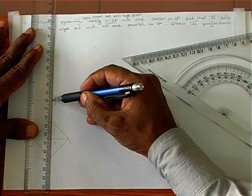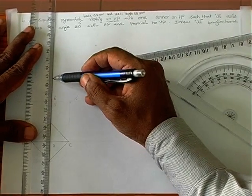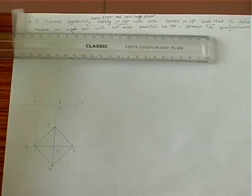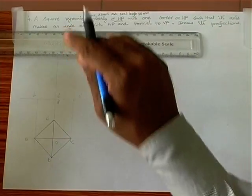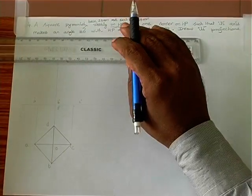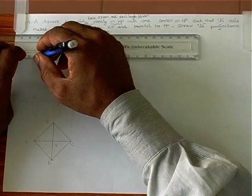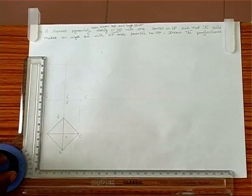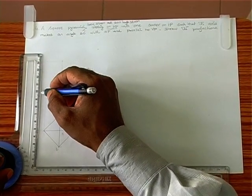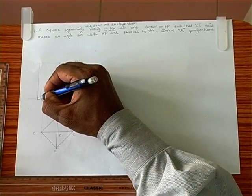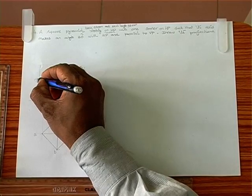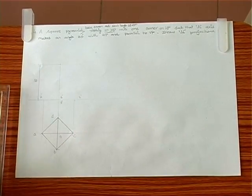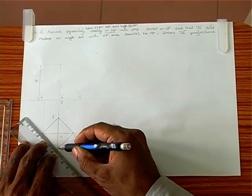The axis length is 50mm, so we mark 50mm here — counting 10, 20, 30, 40, 50. We mark 50 by projecting a line from the 50mm mark. This gives us the height of the pyramid, with the base side being 30mm.